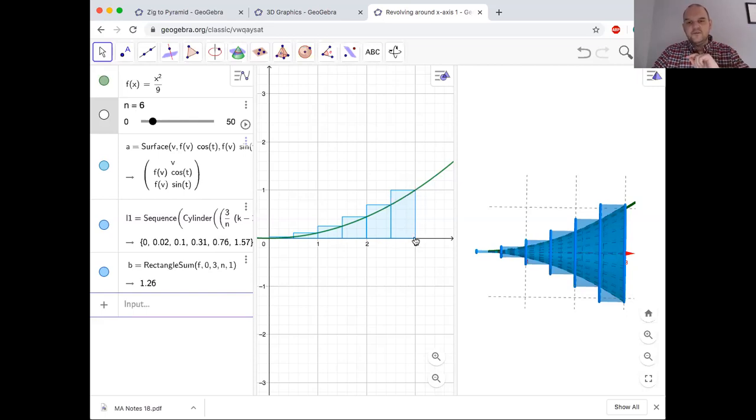You go from zero to 0.5, find the height at 0.5. 0.5 to 1, find the height at 1—the height is the radius I should say. You go from 1 to 1.5, find the radius at 1.5. 1.5 to 2, and you just keep going. That's what we're interested in doing.